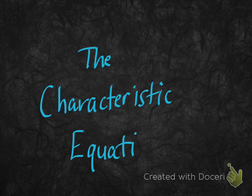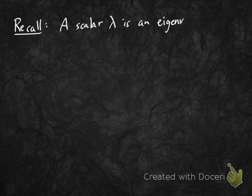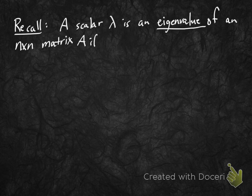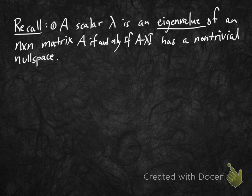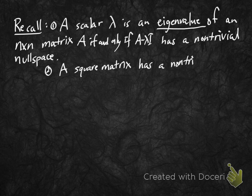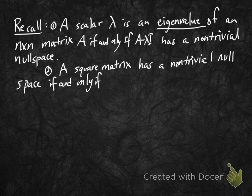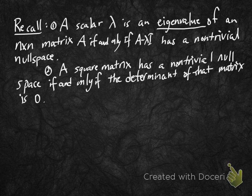Let's talk about the characteristic equation. Recall, a scalar lambda is called an eigenvalue of a square matrix A if and only if A minus lambda times the identity has a nontrivial null space. We also learned that a square matrix has a nontrivial null space if and only if the determinant of that matrix is zero. So we can combine these two statements to come up with a method for computing eigenvalues of a matrix A.